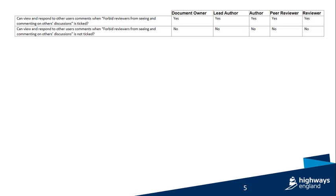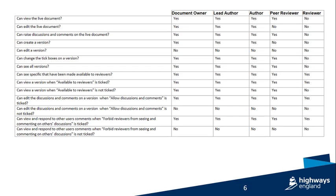If the tick box Forbid Reviewers from Seeing and Commenting on Others' Discussions is ticked, all reviewers are able to see other users' comments and respond to other users' comments. If it is not ticked, then no users are able to see other users' comments. You are able to use a combination of these tick boxes to provide the permissions that you require for your version.